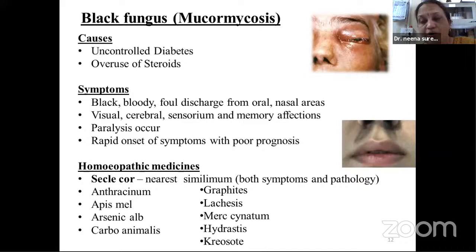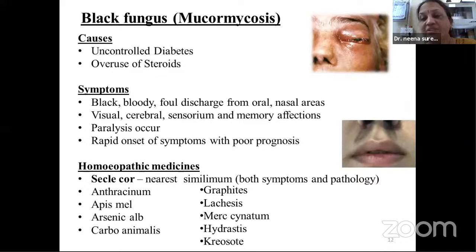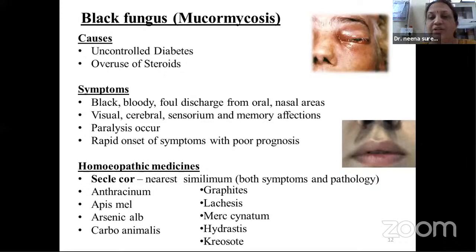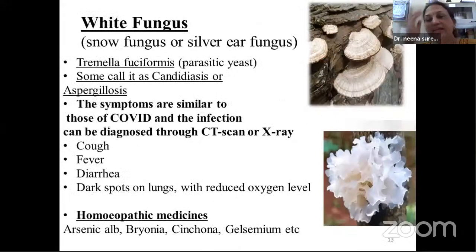Homeopathic medicines have been found to be effective — not 100%, but some medicines have similar symptoms and pathology matching black fungus. The most important medicine is Secale cornutum, which belongs to the fungus family. Other medicines include Arsenicum album, Apis mellifica, Arsenic album, Pyrogen, Carbo animalis, Graphites, Lachesis, Mercuric cyanatum, Hydrastis, Creosotum, etc.